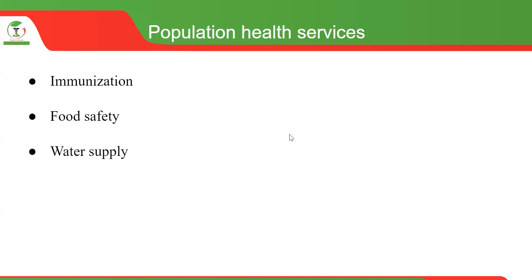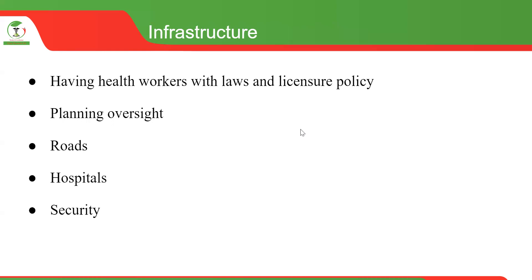Population health services are those aimed at improving population health — for example, immunization, supplying clean water, and making sure that people have safe foods. Those are examples of population health services. When you talk about infrastructure, we think about roads, the buildings of health facilities, hospitals, general security of the country, socioeconomic infrastructure, and issues to do with laws, policies, and planning. These are important things required to provide infrastructure services.